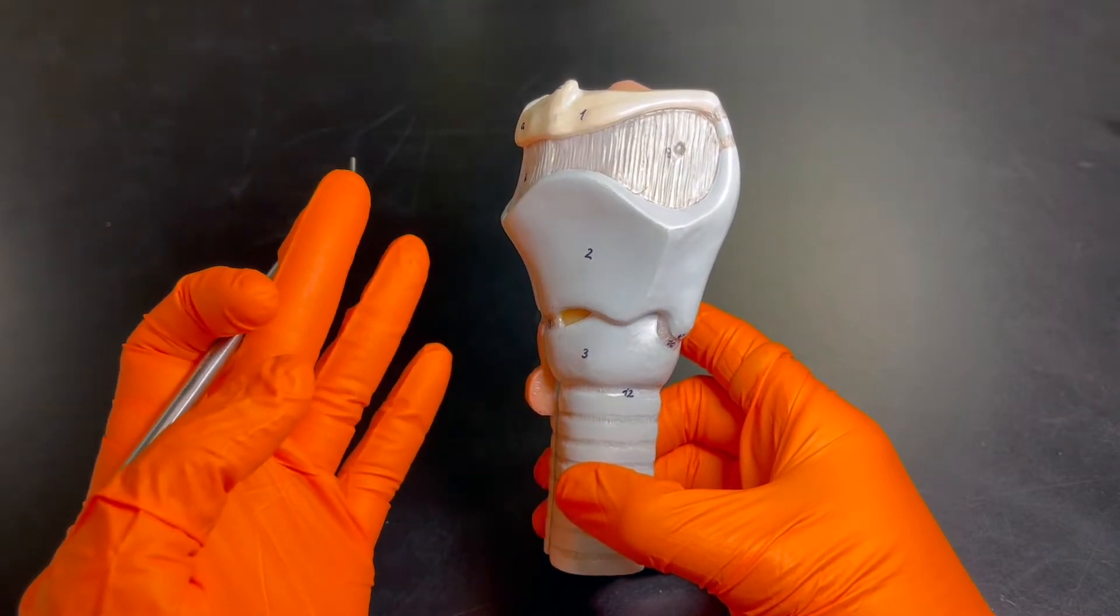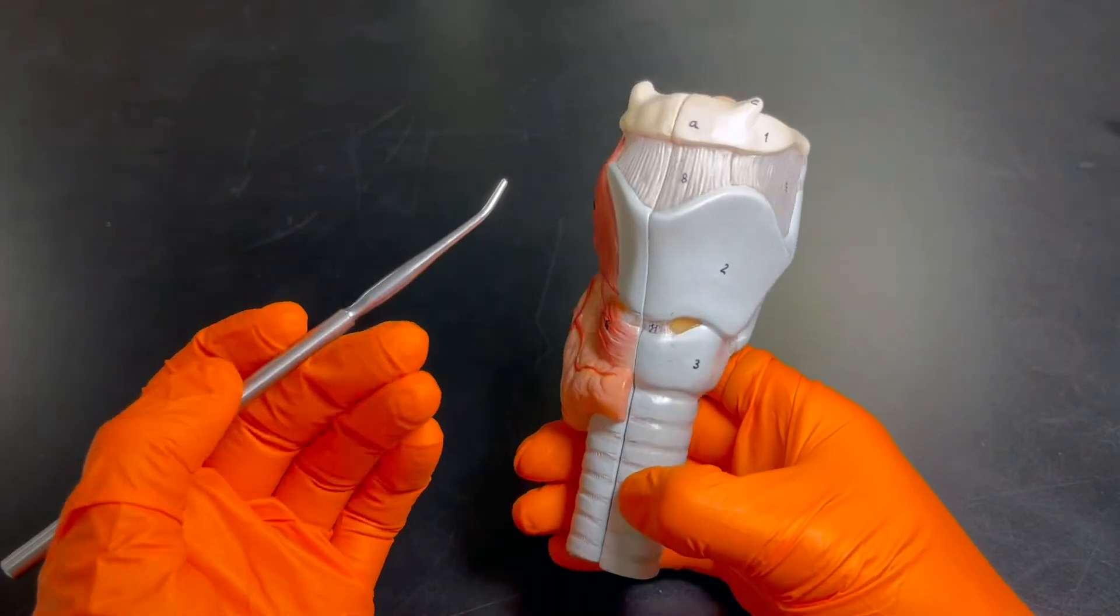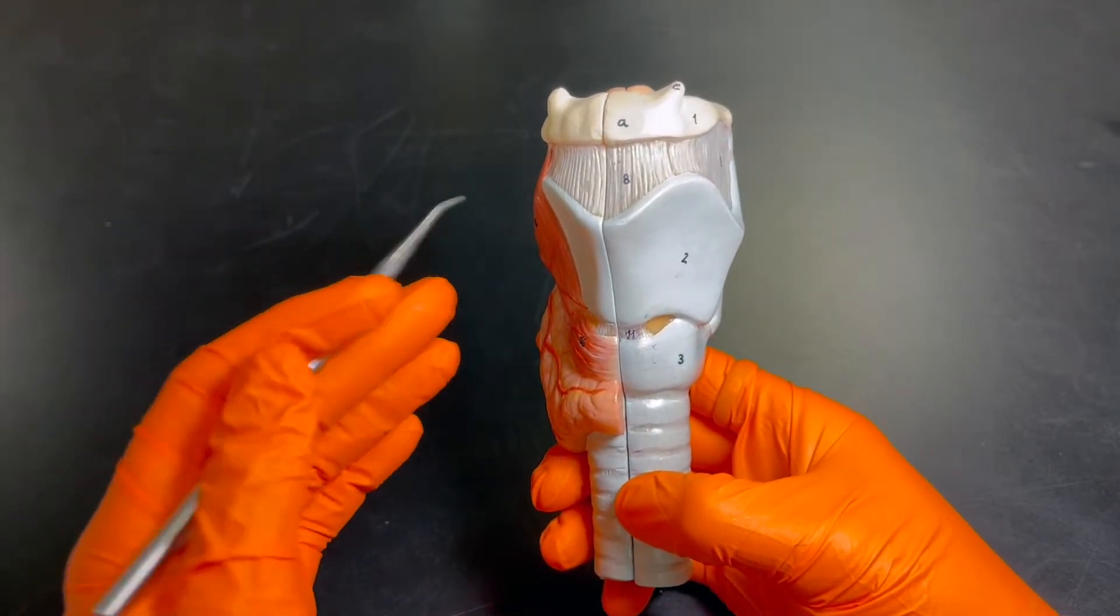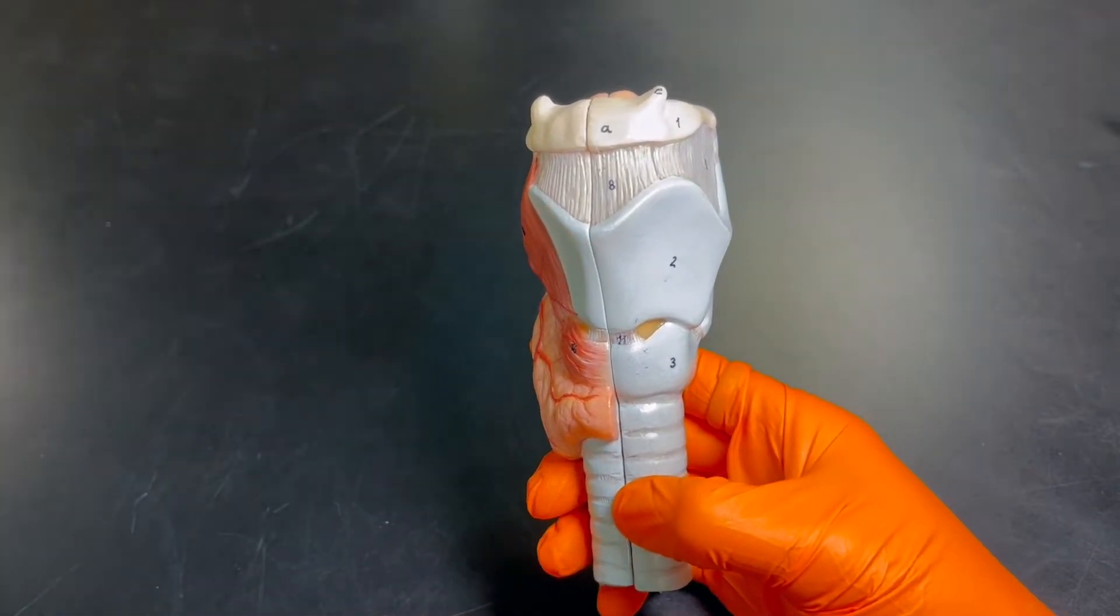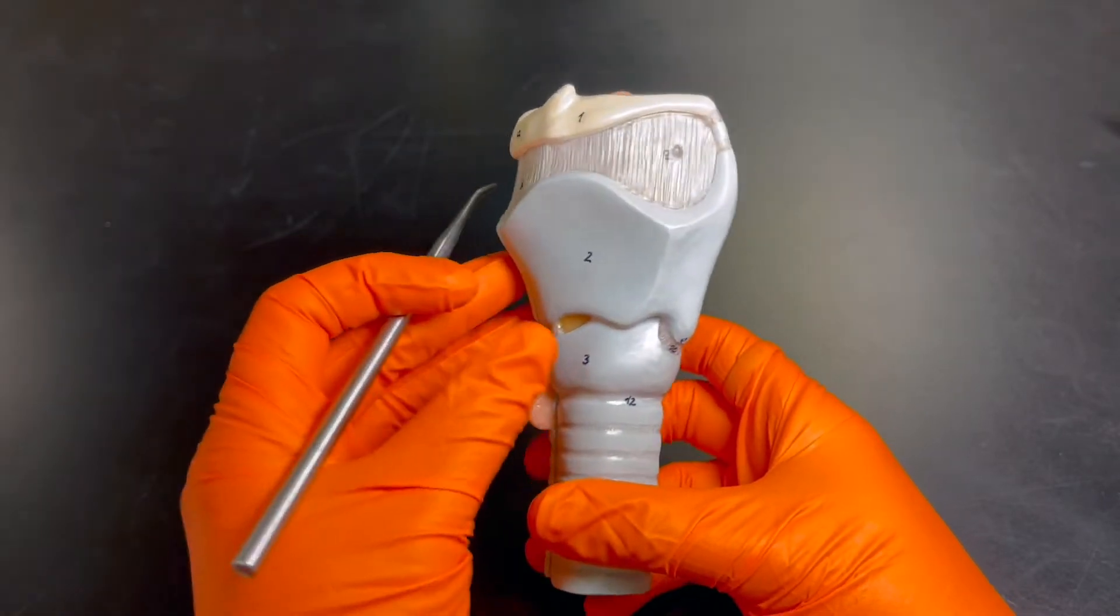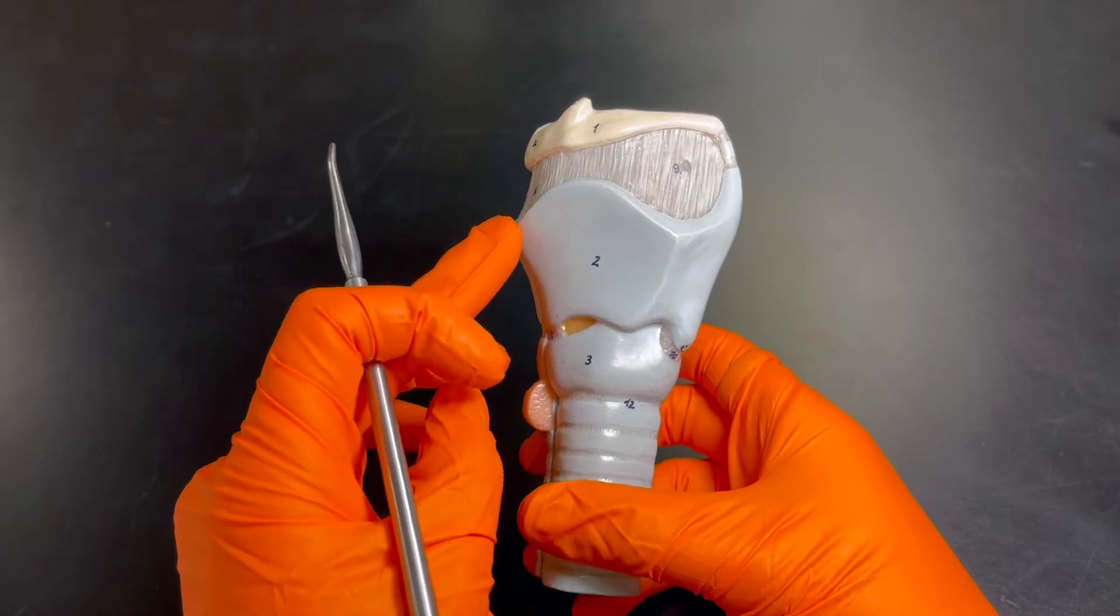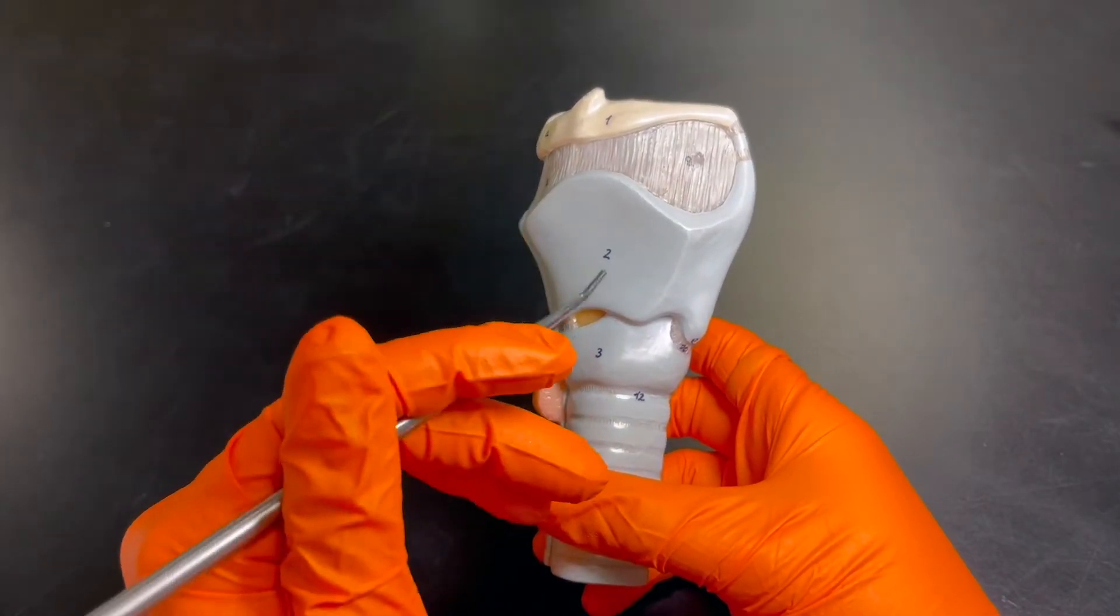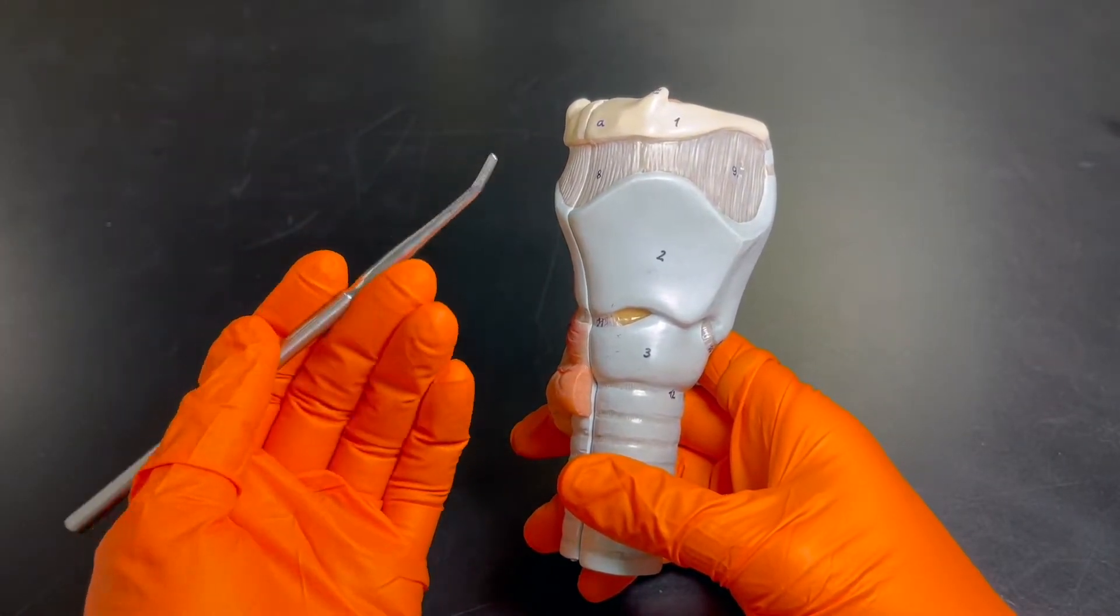But also this part right here - remember this is anterior, this is posterior - this part right here is called the anterior laryngeal eminence, and it has a nickname. Some people may know this as the Adam's apple. Why is it called the Adam's apple? Well, it's because in that wonderful, glorious time called puberty, little boys and girls are getting dumped with those sex hormones, and this tissue right here is very receptive to testosterone. So boys tend to have a more prominent or larger anterior laryngeal eminence because of testosterone.